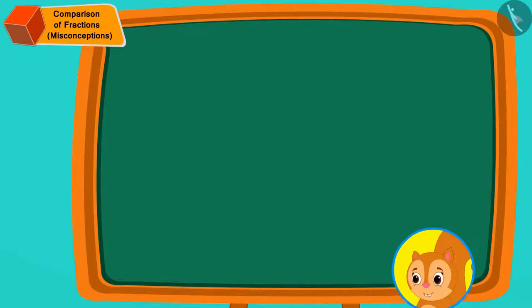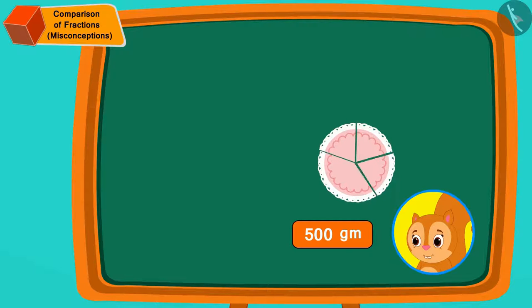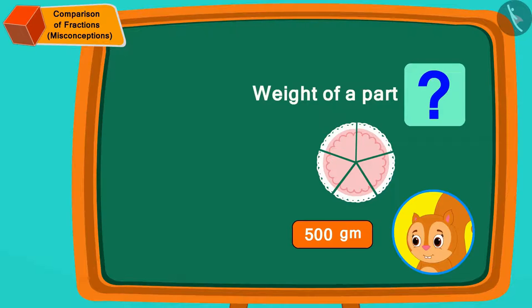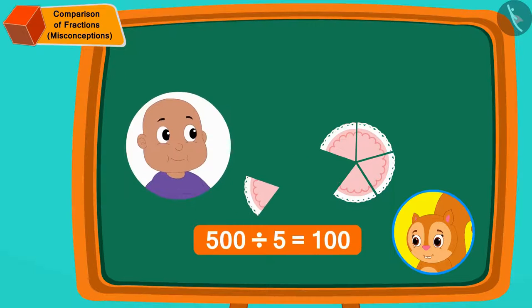Now Chanda's cake is 500 grams. If we divide it into five equal parts, then how many grams is each part? Each part is 500 divided by five or 100 grams. In this way, Bablu has got one part of Chanda's cake or 100 grams of cake.